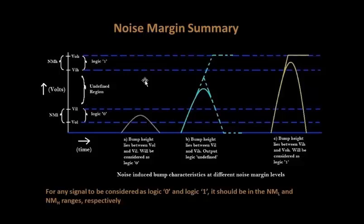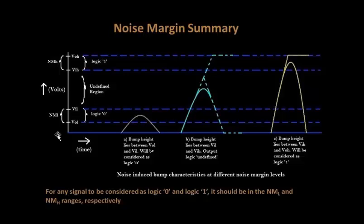Let's start with the low bump first. If a bump height lies in the NML area, it's not hazardous because it still lies in the range of logic 0 and your logic will still be kept as logic 0 — it won't harm the circuit. These are glitches: if a net was steady at logic 0 and due to some reasons it gets a glitch, and that glitch lies in this range, it's still a safe glitch.